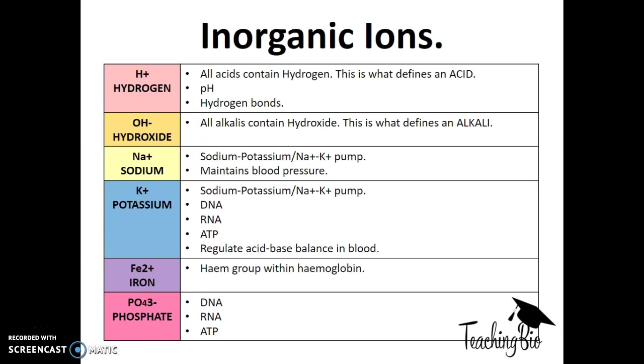Pause the video and copy down this table. The table shows each of the different types of ions that you'll come across at AS level biology. The way this topic is designed is that it links to lots of other topics, and it's quite subtle. But you do need to know that, for example, hydrogen ions lower pH. They make an acid. Hydroxide ions increase pH—they're alkali.